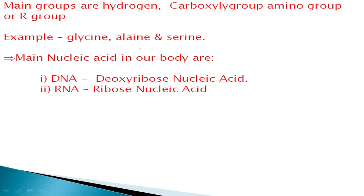The R group is mainly our carbon group. Examples of amino acids include glycine, alanine, and serine. In all of them, the basic change is in the main functional group — the amino acid main group. When we change these hydrogen and carbon groups together, because of these changes in characteristics and functions, the amino acids are completely changed.